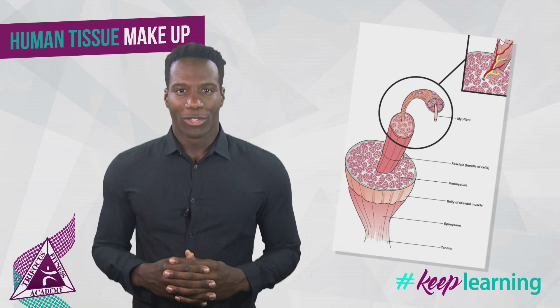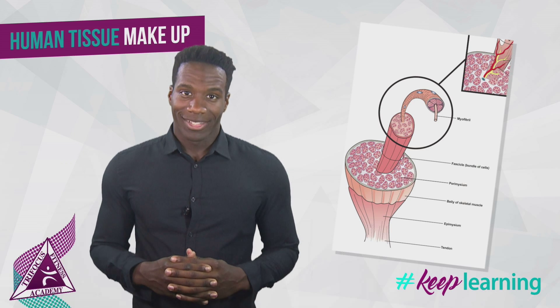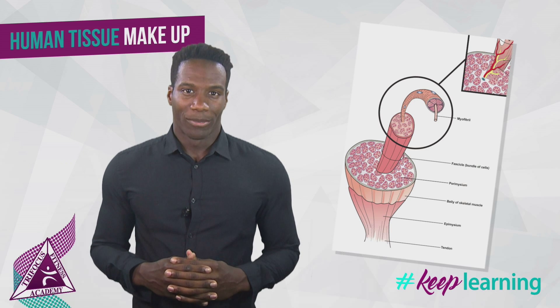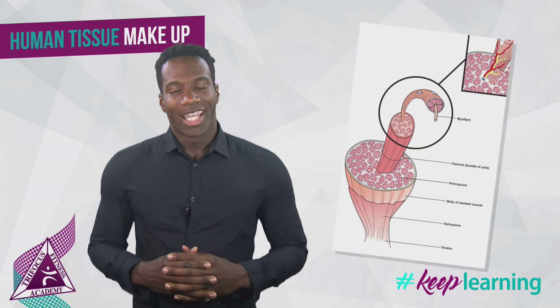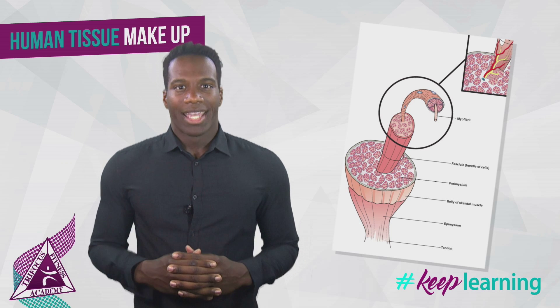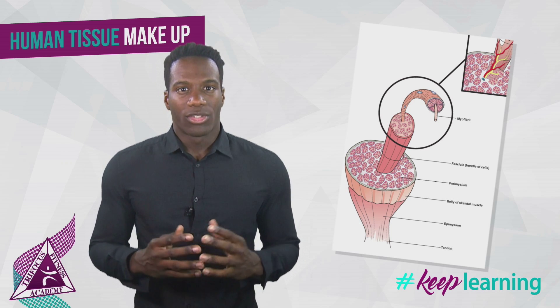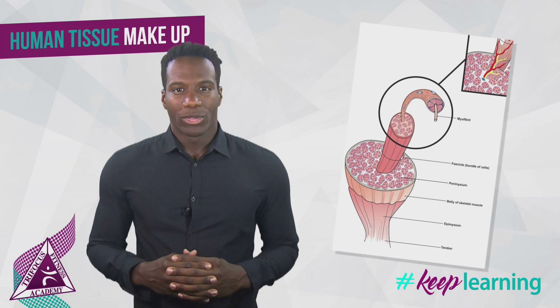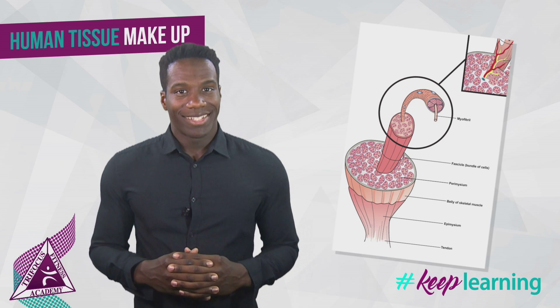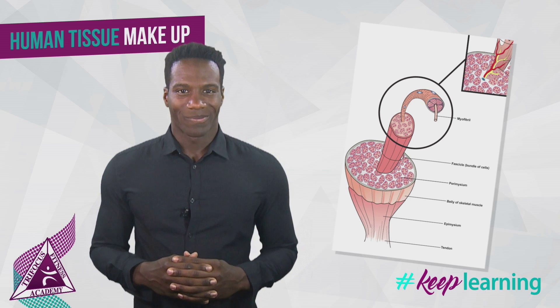Actin is a thin filament and myosin is a thick filament, also shown on the following diagram. It is the interaction between these two filaments that causes the muscle to contract and shorten.